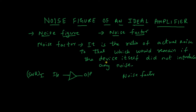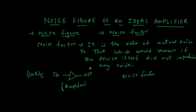There is something called a 'device' in the definition of noise factor, so let's draw the device. Say this is a device and that it is an amplifier. As you know, an amplifier will take input and it will amplify the signal. So let's apply this noise factor definition to the amplifier — what is the noise factor of an amplifier? It is the ratio of actual noise to that which would remain if the amplifier itself did not introduce any noise.